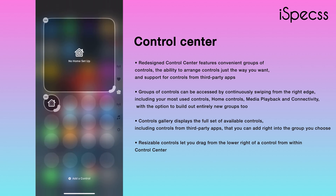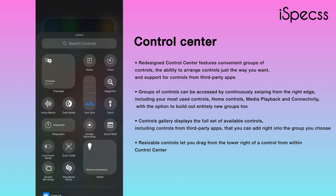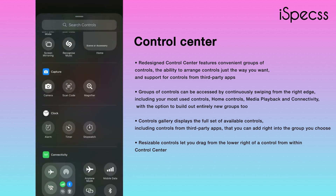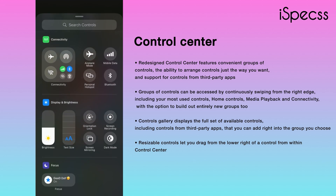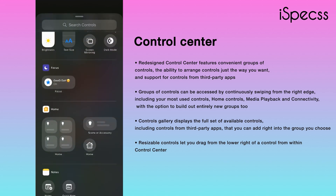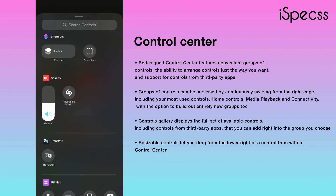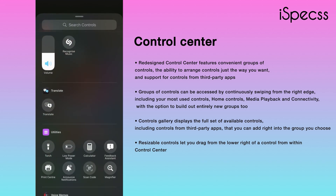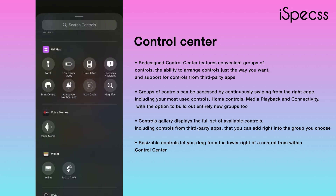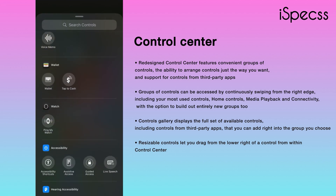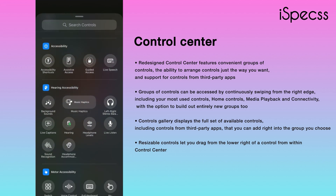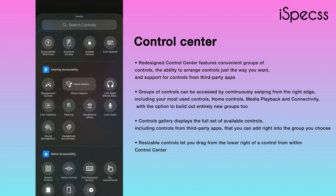There is a small option called 'Add a Control' where you can literally add a lot of options and features, including shortcuts, translator, utilities, and much more.